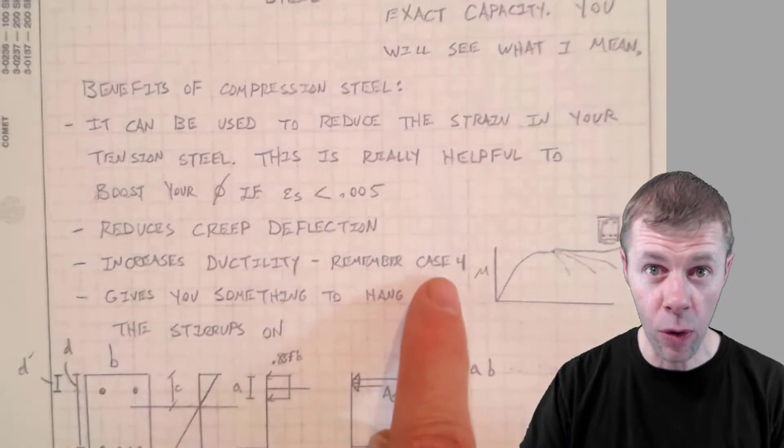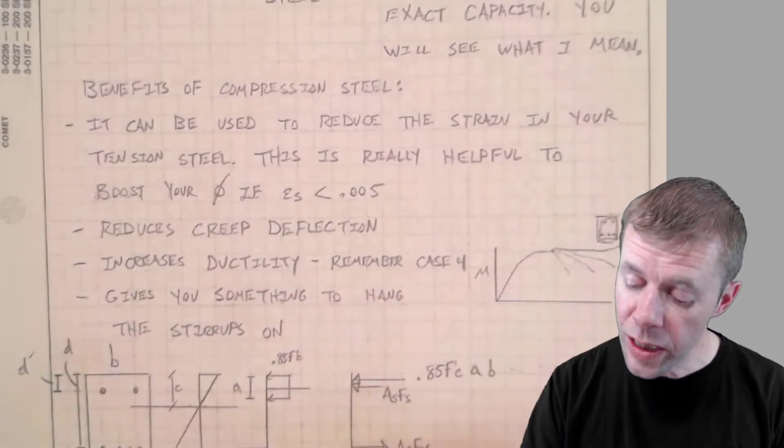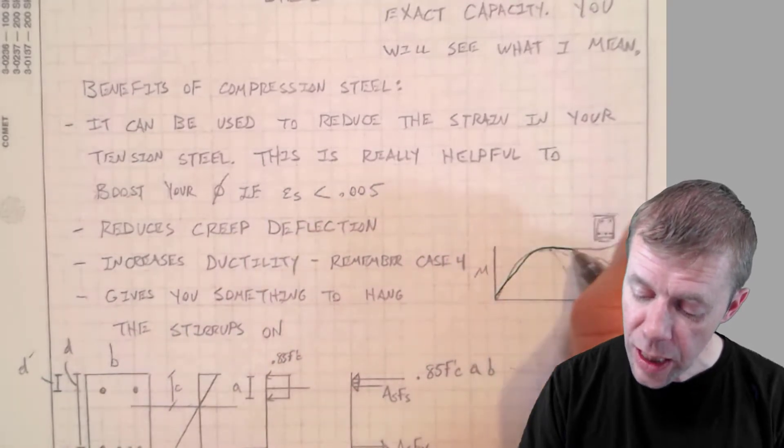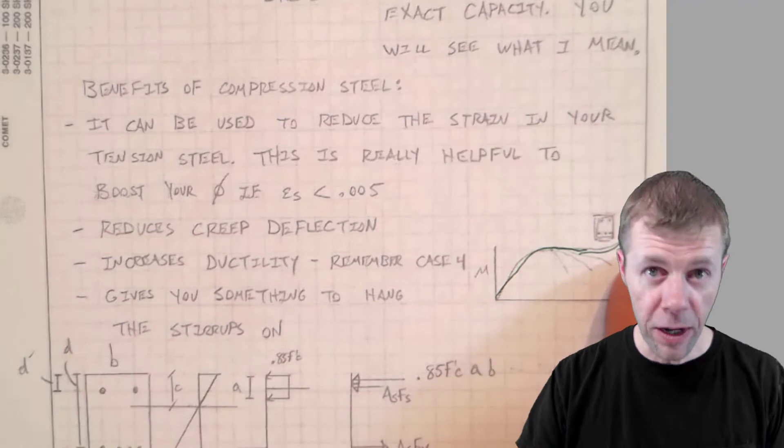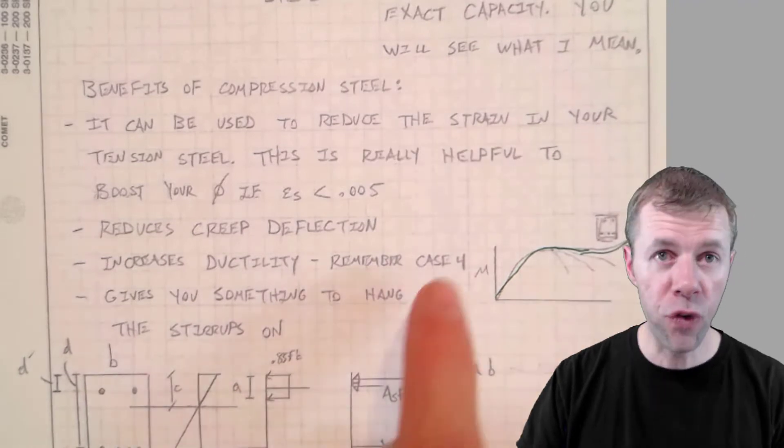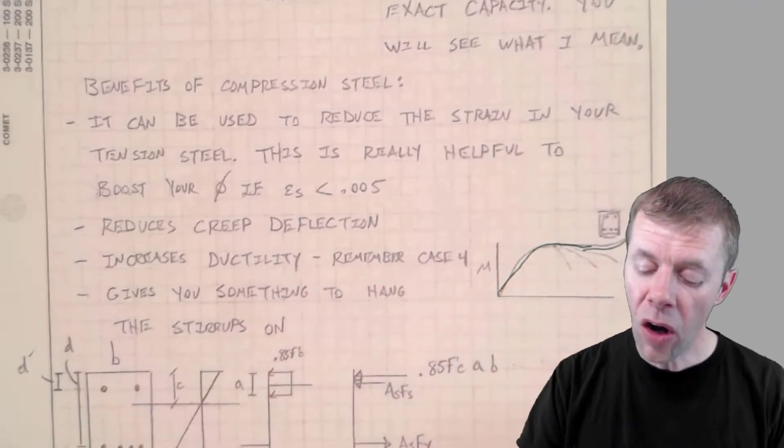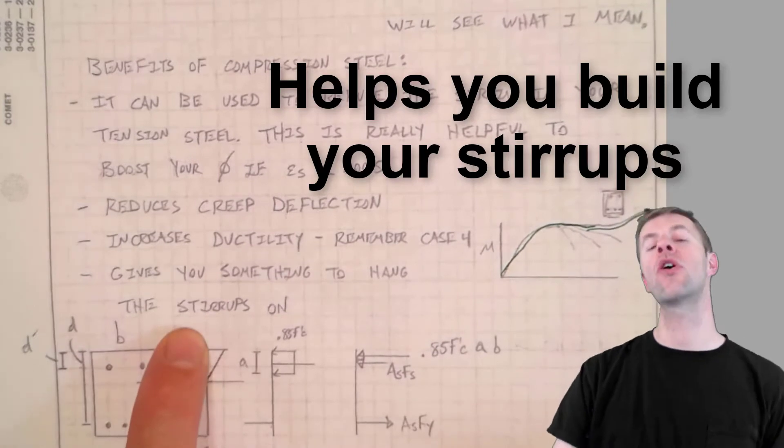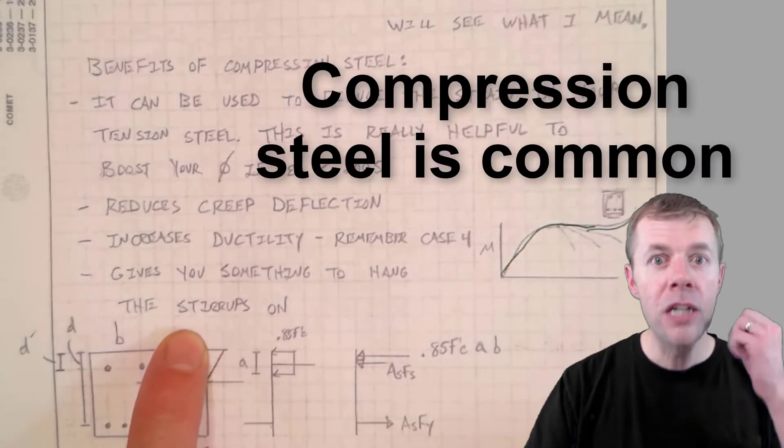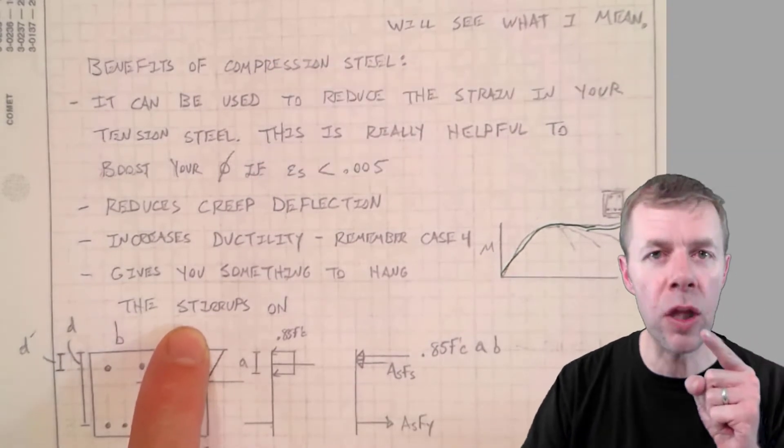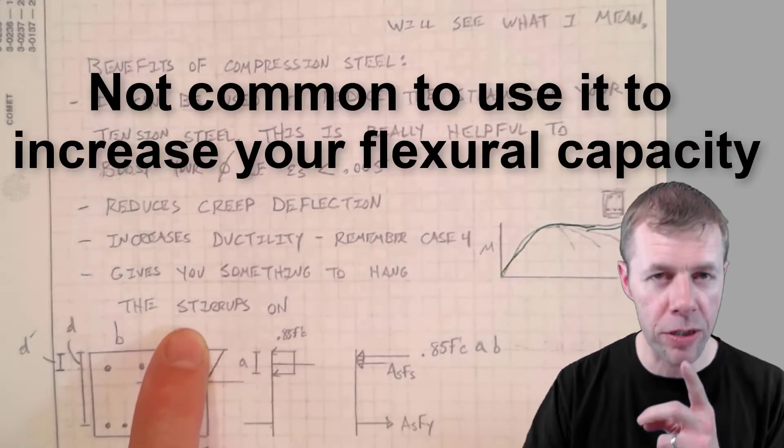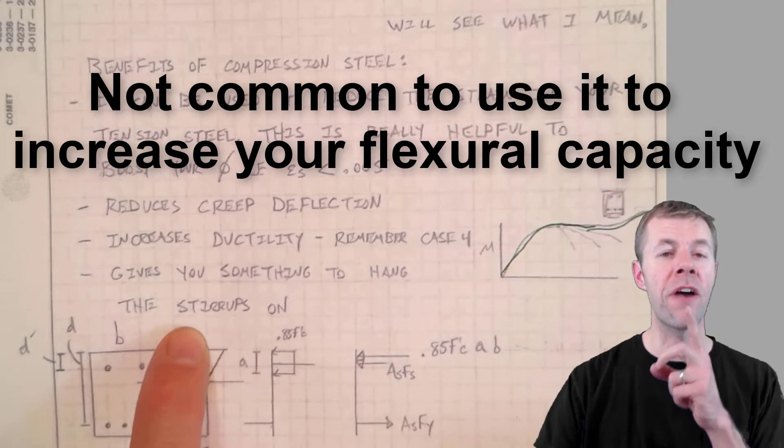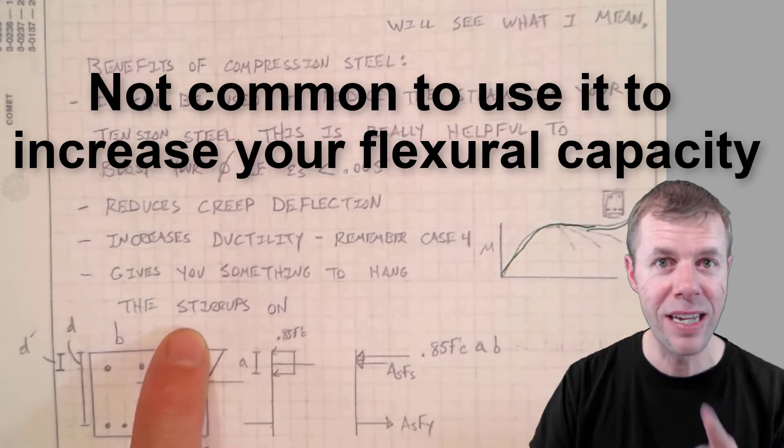Remember case four from that other video I showed you? The one where you really start to get ductility, really have to keep going? That's a good thing. That's how you save lives. That's case four. That's very helpful. It also gives you something to hang your stirrups on. It's pretty common to always have compression steel in your beam. It's not very common to take that compression steel into account to find the capacity. We're going to show you how to do it today.